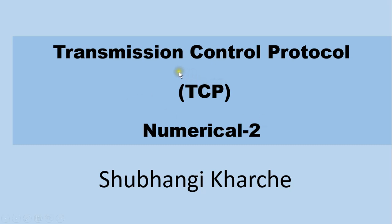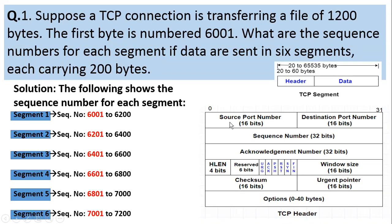Hello everyone. In this video I am going to explain an example on TCP sequence numbers. The example is: suppose a TCP connection is transferring a file of 1200 bytes. The first byte is numbered 6001. What are the sequence numbers for each segment if data are sent in 6 segments, each carrying 200 bytes?